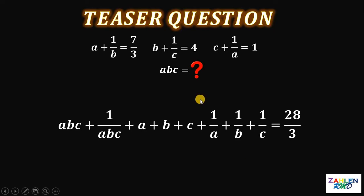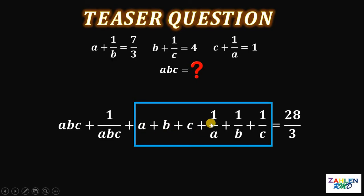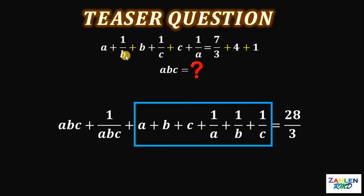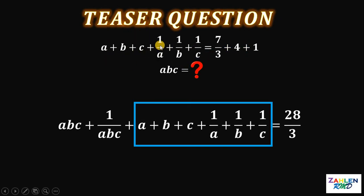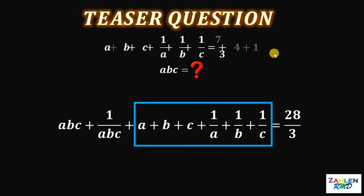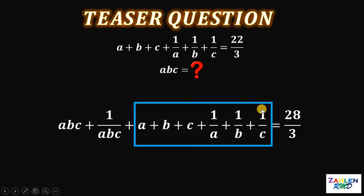Notice this expression: we have A plus B plus C plus 1 over A plus 1 over B plus 1 over C. This is familiar because it's the result when we add the three given equations: (A + 1/B) + (B + 1/C) + (C + 1/A), rearranged as A + B + C + 1/A + 1/B + 1/C. This equals 7/3 plus 4 plus 1, which gives us 22 over 3. Therefore this expression must be equivalent to 22 over 3.